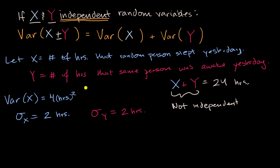And let's say that the standard deviation of Y is also equal to two hours, and the variance of Y would be the square of the standard deviation, so it would be four hours squared.